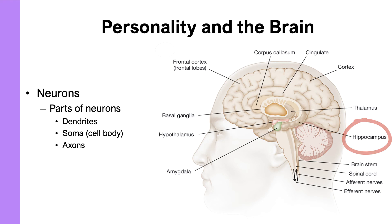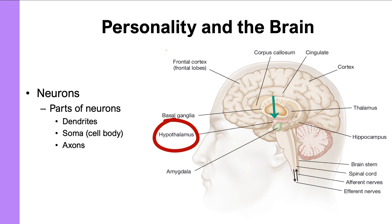Other brain parts associated with personality include the hypothalamus — a small structure above the amygdala — which is involved in the fight-or-flight response and maintaining homeostasis, including emotional well-being. The hypothalamus and amygdala have been associated specifically with neuroticism and measures of anxiety in personality research.